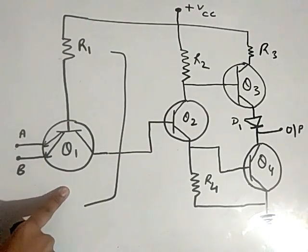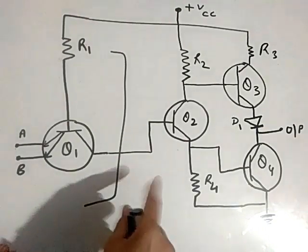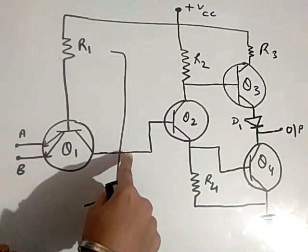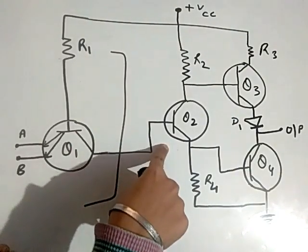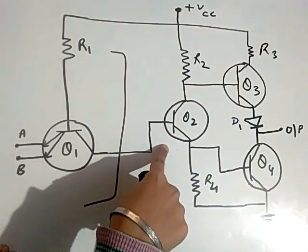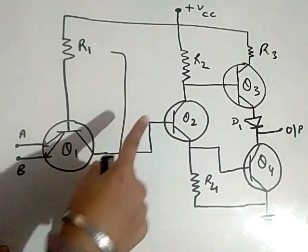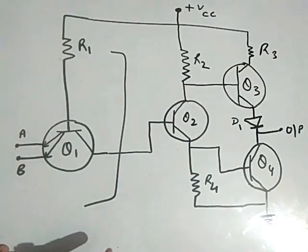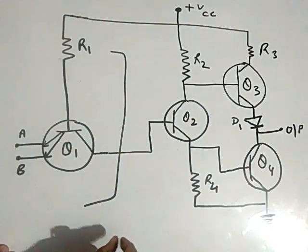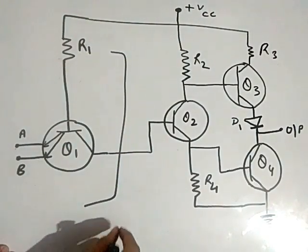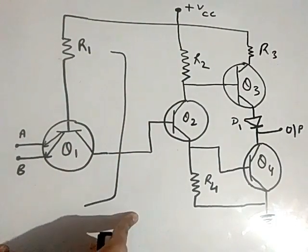Both emitters A and B work like a NAND gate. The output of Q1 converts Q2, so it works as a NAND gate. This circuit is fast, inexpensive, and easy to use.